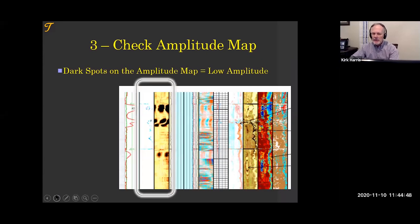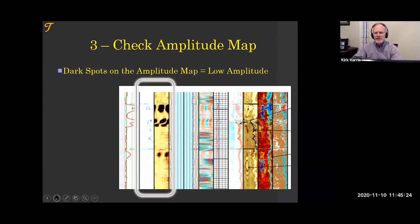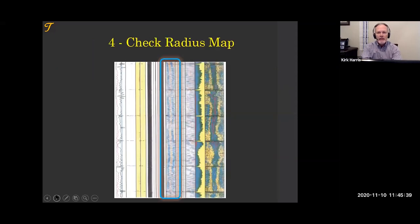Number three, we check the amplitude map. Dark spots just mean something's going on. The two big things that usually occur: it's holes in the casing — this is old corroded casing — or number two, there is cement on the inside of the casing, so instead of reflecting off of steel, you're reflecting off of cement residue. In an old well it may be paraffin. That's why we recommend running casing scrapers, especially in old wells, before we run the log. The inside of the casing can affect not only the amplitude map but the cement map. Number four, we check the radius map.